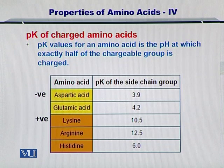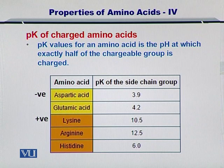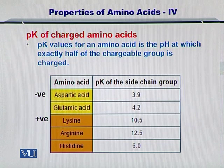For the positively charged amino acids lysine, arginine, and histidine, the pK values for the side chain are 10.5, 12.5, and 6. This is a very important concept because it helps you to determine the charge on an amino acid at any given pH.